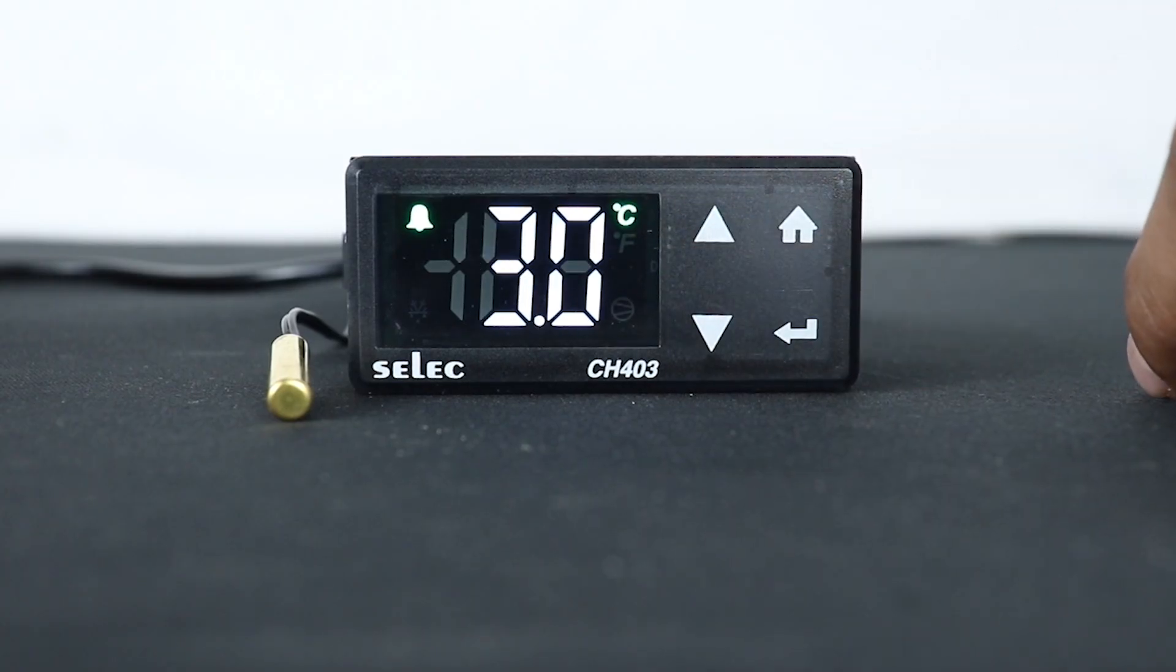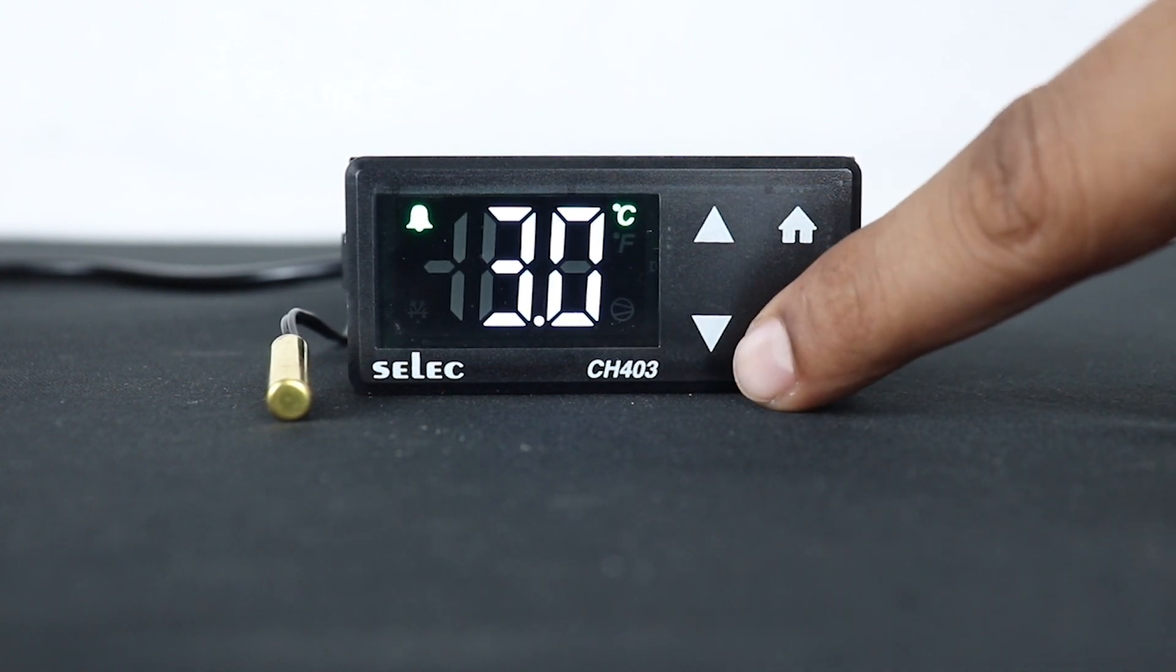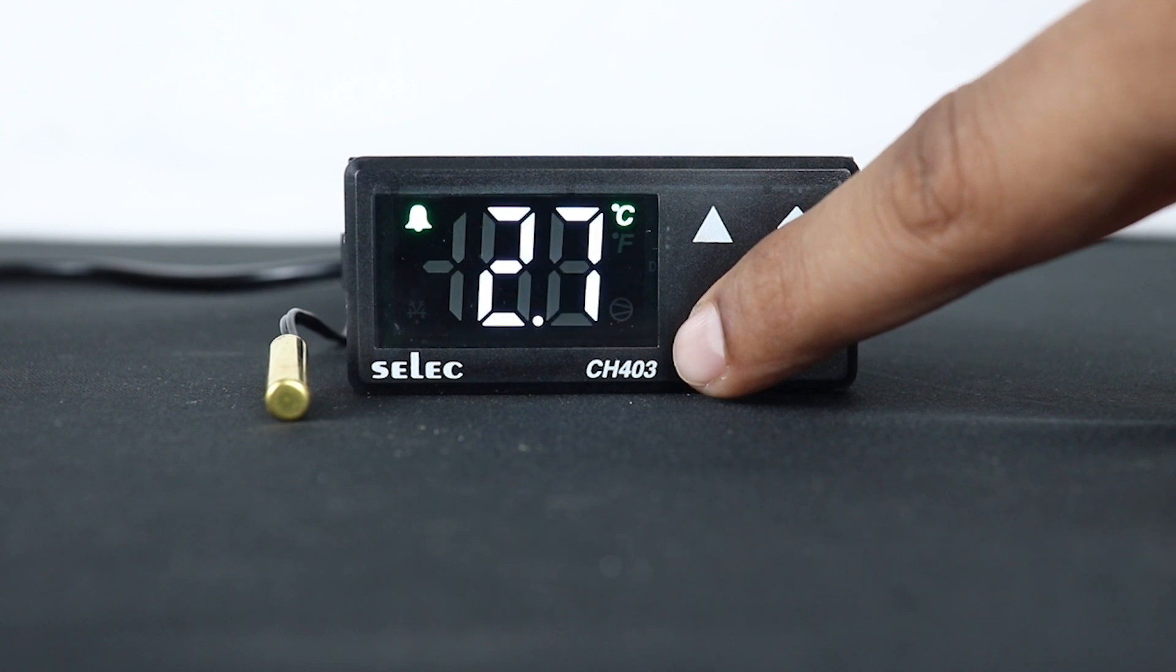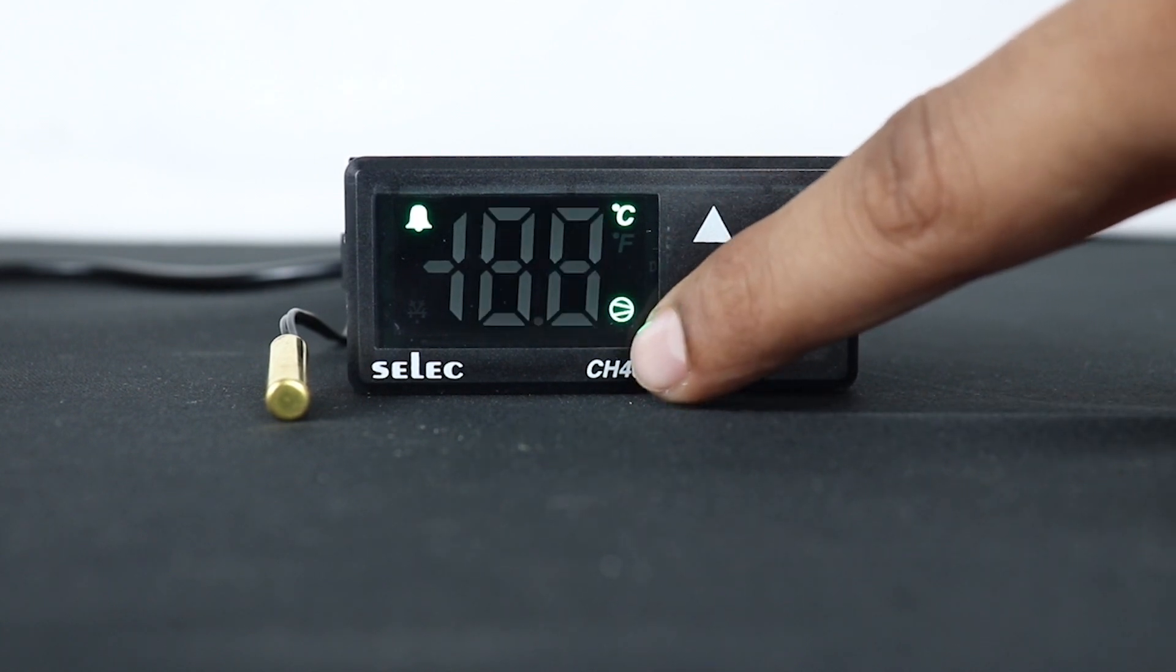P6 denotes restart time delay. By setting this parameter, user can set time duration after which the relay turns on after restart. It is used to prevent compressor from restarting in a short period of time.